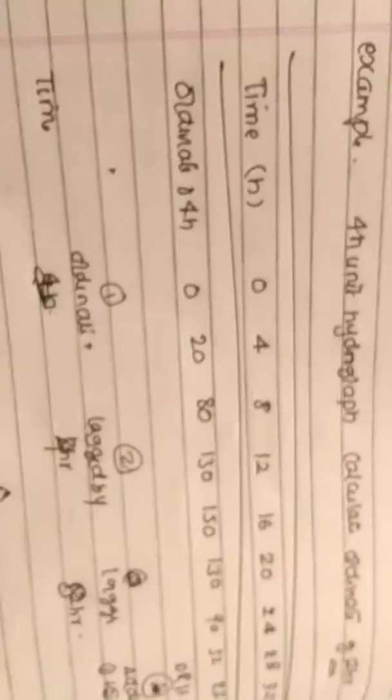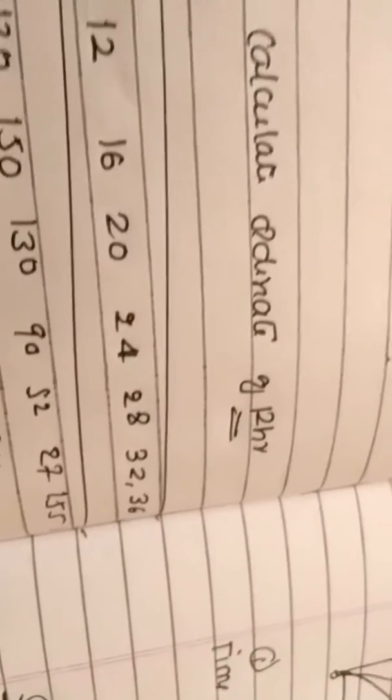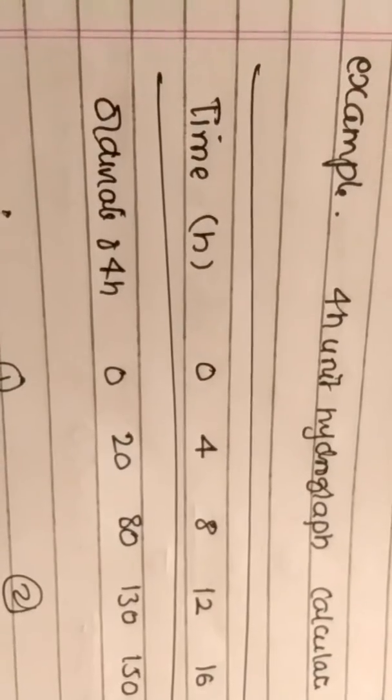Let us discuss how to calculate the unit hydrograph using the superposition method. For example, given a four-hour unit hydrograph, if they ask to calculate the ordinate of twelve hours, we need to calculate the twelve-hour unit hydrograph. This is shown in the graph.